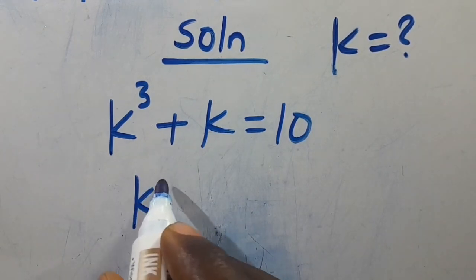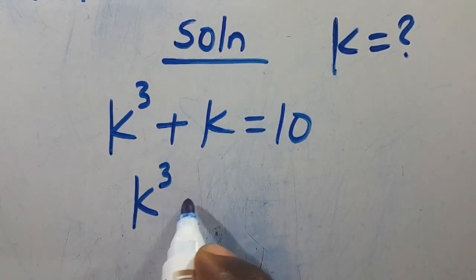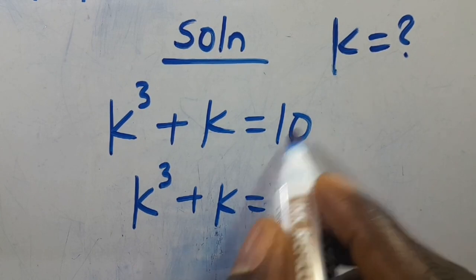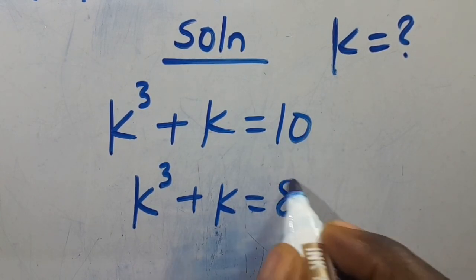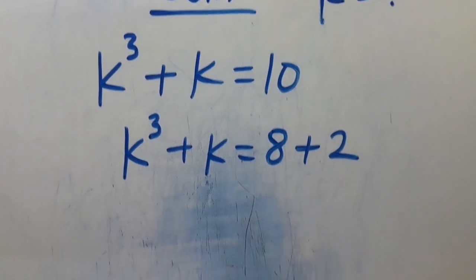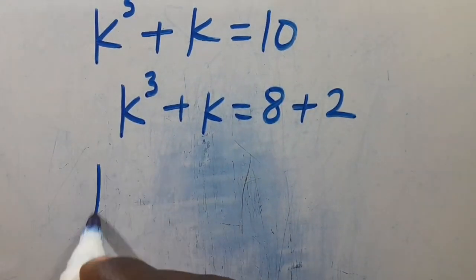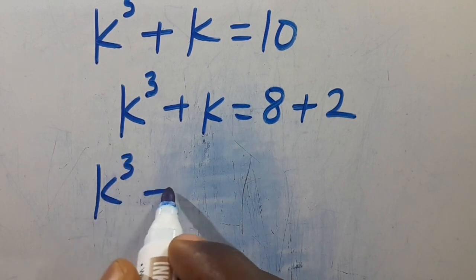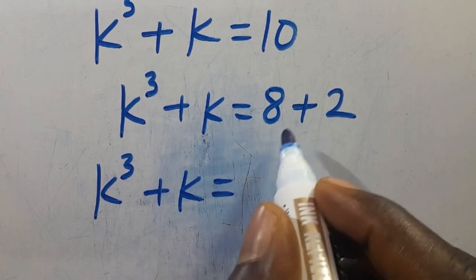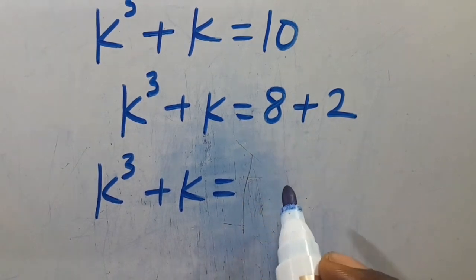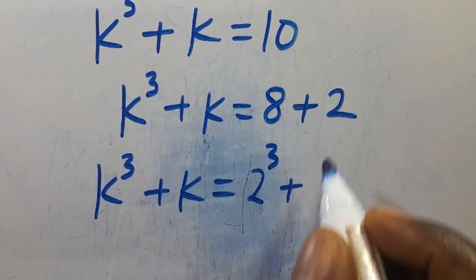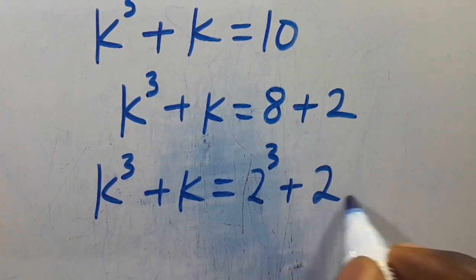From here we have k to the power of 3 plus k equals 10, and we can simplify this as 8 plus 2. So, we can write 8 in base 2 as 2 to the power of 3, giving us k to the power of 3 plus k equals 2 to the power of 3 plus 2.